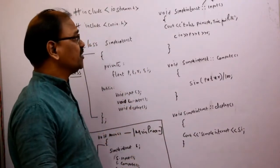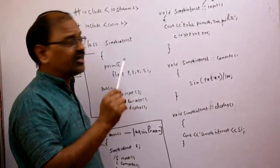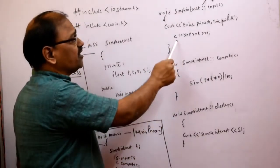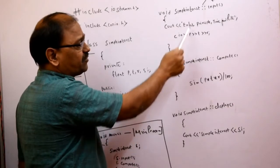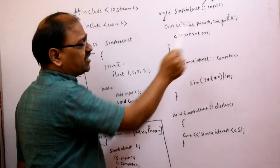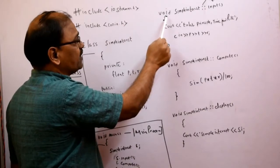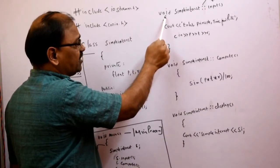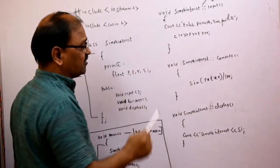Here P stands for principle, T stands for time, and R stands for rate. This is the input member function — we open it with a curly brace and close it with a curly brace.